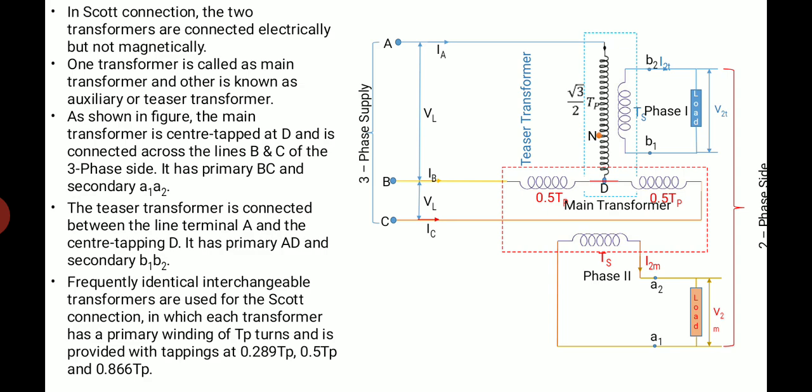As shown in this figure, the main transformer is center tapped at point D and is connected across the line terminals B and C of three-phase side. It has a primary BC and secondary A1, A2. The teaser transformer is connected between the terminals A and D and has the primary AD and secondary B1, B2. Frequently identical interchangeable transformers are used for the Scott connection in which each transformer has a primary winding of TP turns and is provided with tappings at 28.9%, 50% and 86.6% of primary winding turns.